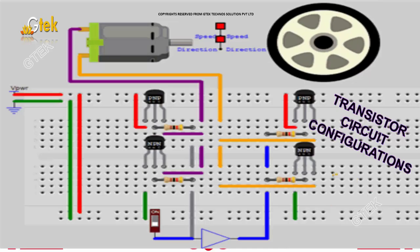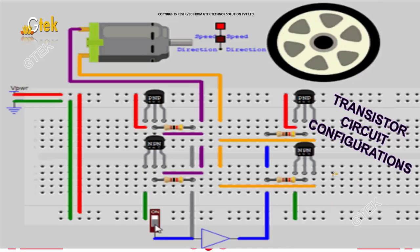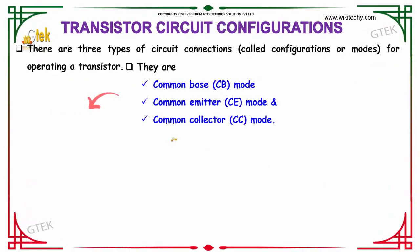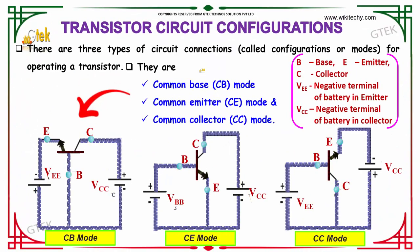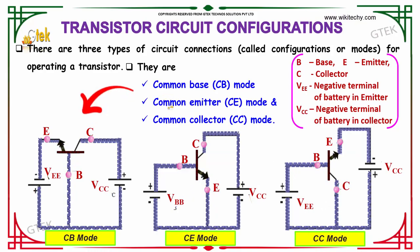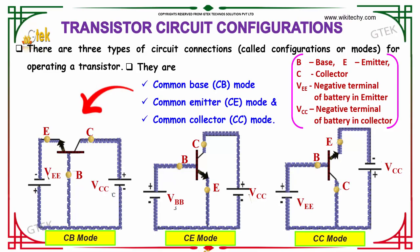Here are the transistor circuit configurations. There are three types of circuit connections available for operating a transistor: common base, common emitter, and common collector. In common base, the base is in the center; in common emitter, the emitter is in the center; and in common collector, the collector is in the center.